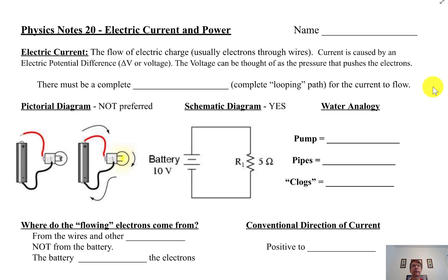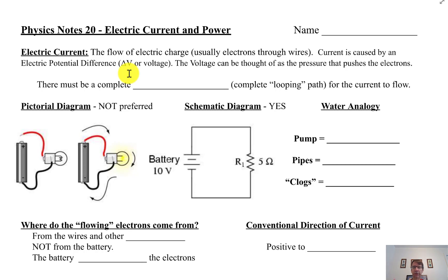Physics notes, unit 20: electric current and power. The word current here is very similar to what we would use to refer to the current in a river — water flowing through a river. We're going to be using a lot of analogies here. Electric current is the flow of electrons through wires. It could be protons, but usually it's not because protons are stuck in the nucleus. Electrons are loose, and those are the things responsible for current in wires. The current is caused by a potential difference — a voltage, delta V. The potential difference is kind of like the pump in a water system pushing electrons.